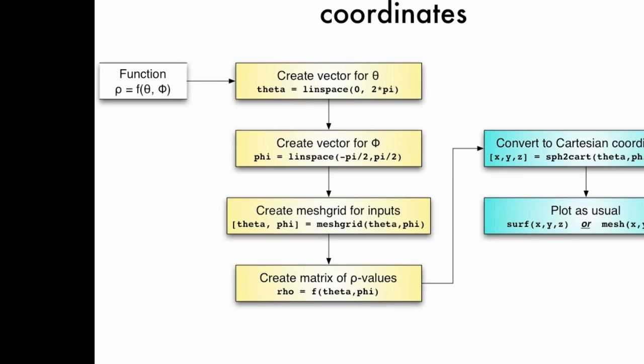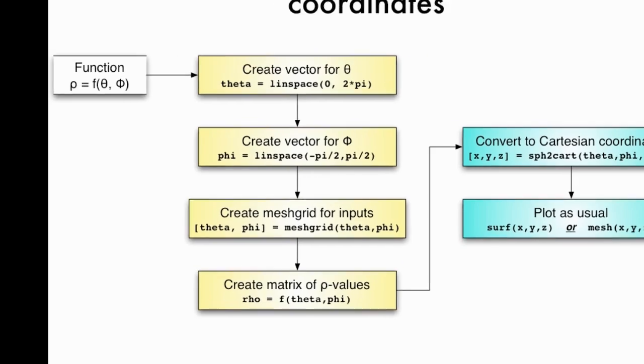Then I have to create a vector that specifies the values of theta that I want to plot using the linspace command or the colon syntax for creating vectors. Then I need to create a vector for phi, my other input variable, the same way. Then I have to create a mesh grid for all those inputs so I can attach a z value to them and plot them point-wise.